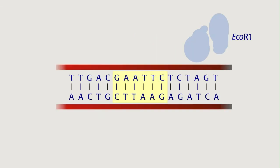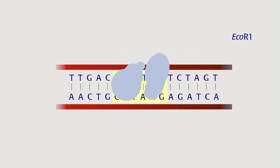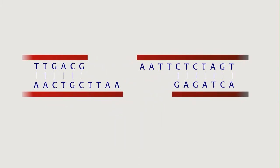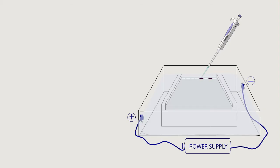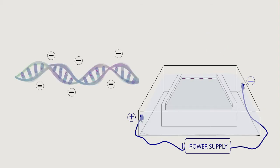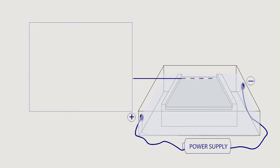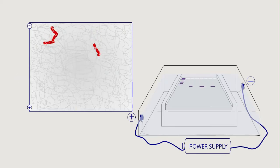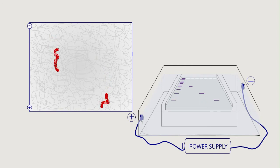Restriction enzymes cut specific sequences of DNA, and that sequence can be different between different restriction enzymes. The trick is to try to separate the DNA that has been cleaved. One uses a technique called gel electrophoresis, because DNA is charged and will move through an electric current. Because the gel is porous, some molecules move through it faster than others — smaller ones go through faster and bigger ones go through slower — and as a consequence you can separate them by size.